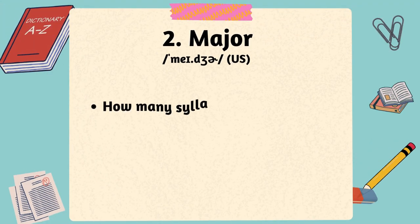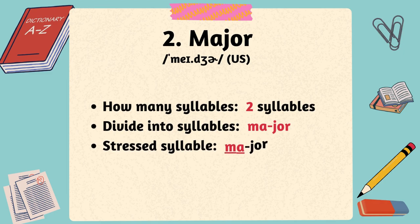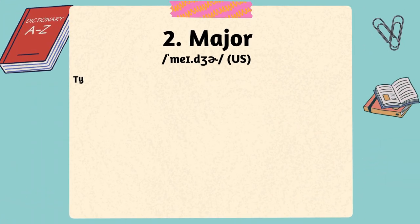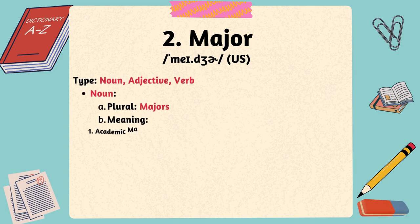The second word is major. The word major has two syllables, with the stress on the first syllable. Major has several meanings and can be used as a noun, an adjective, and a verb. When major is used as a noun, its plural noun is majors.